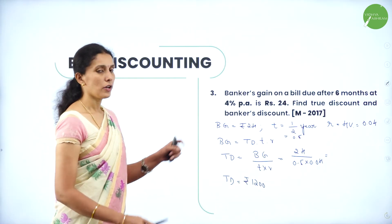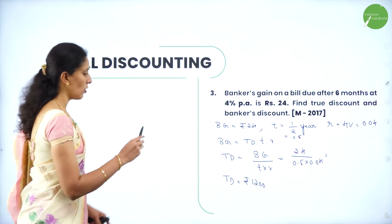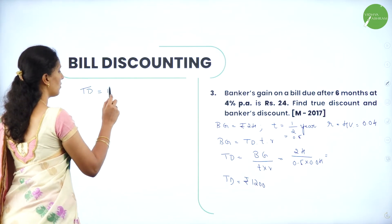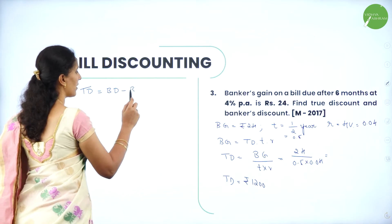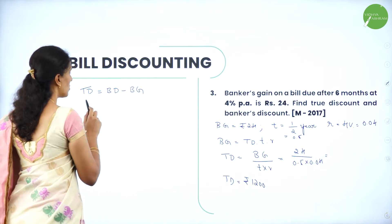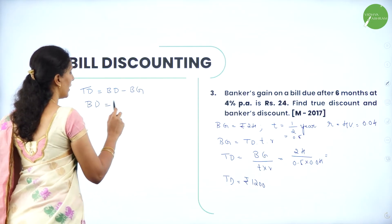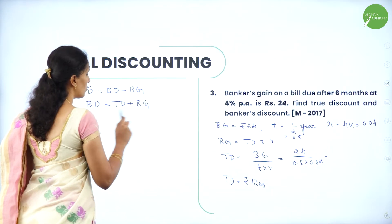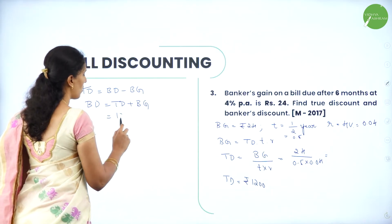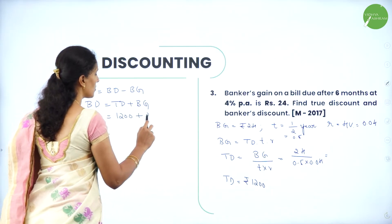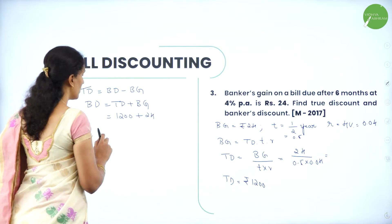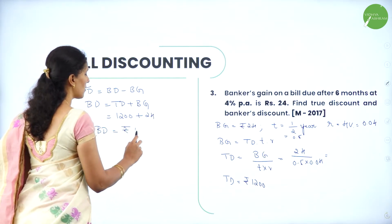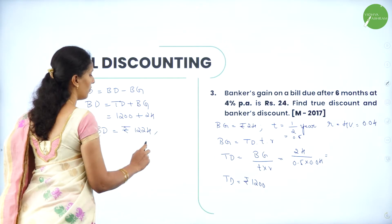Now we need to find banker's discount. We know the formula: true discount equals banker's discount minus banker's gain. So banker's discount equals true discount plus banker's gain: 1200 plus 24. Therefore banker's discount is equal to Rs. 1224.